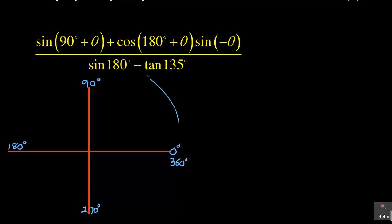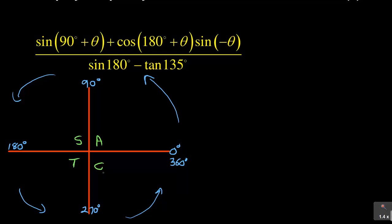Remember, you are moving anti-clockwise — that is the direction you are moving, as you can see. It's a complete revolution. Now, remember we call it a CAST diagram. Where is it coming from? It comes from: All Students Take Chemistry — as you can see there is the CAST: C-A-S-T — that's why they call it the CAST diagram.